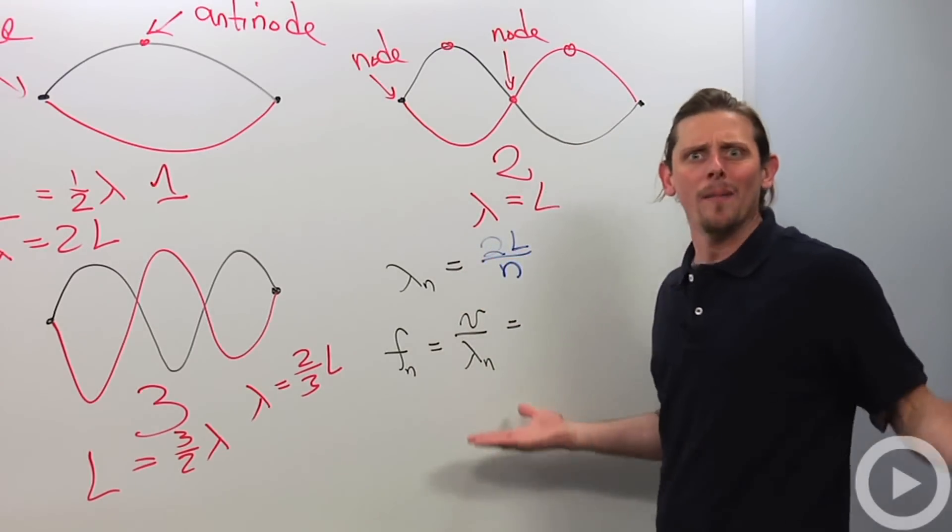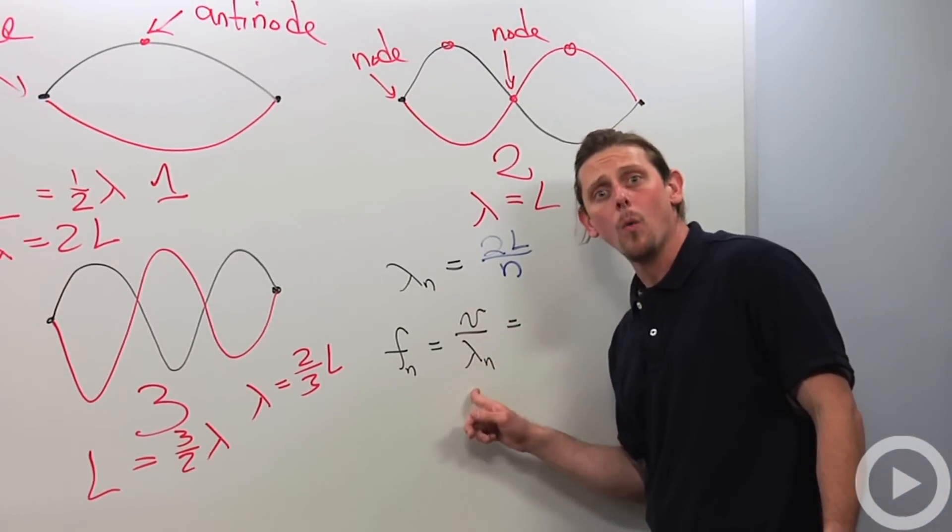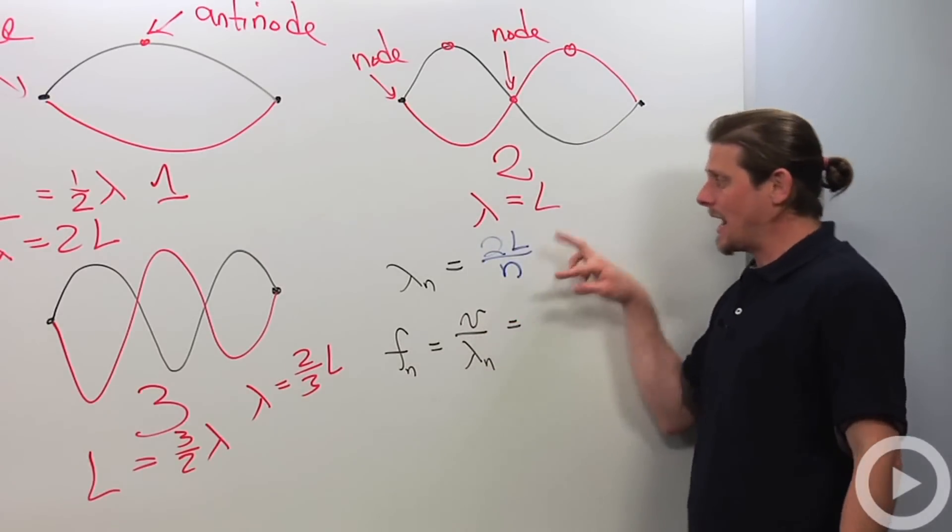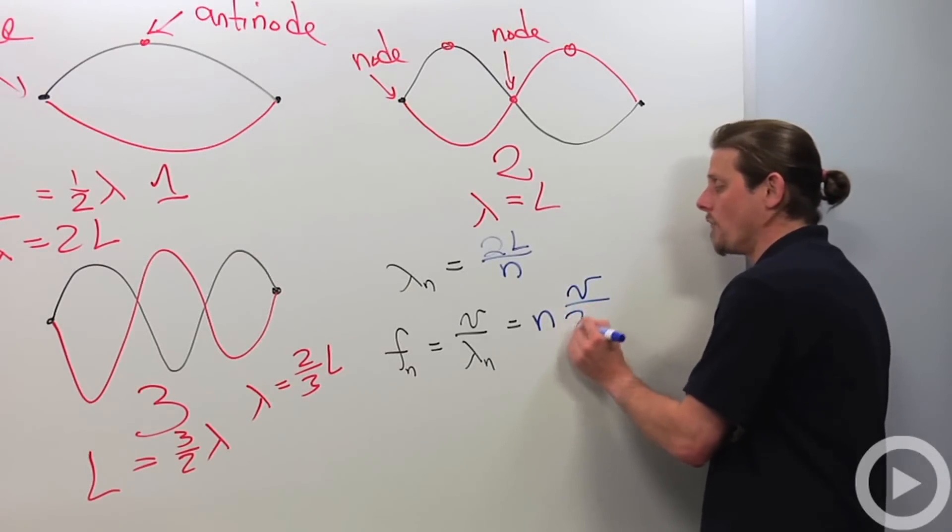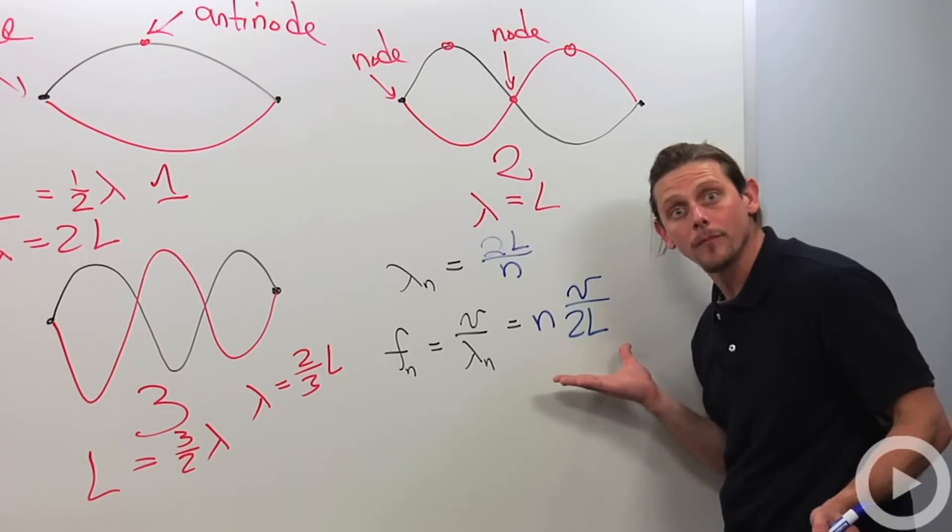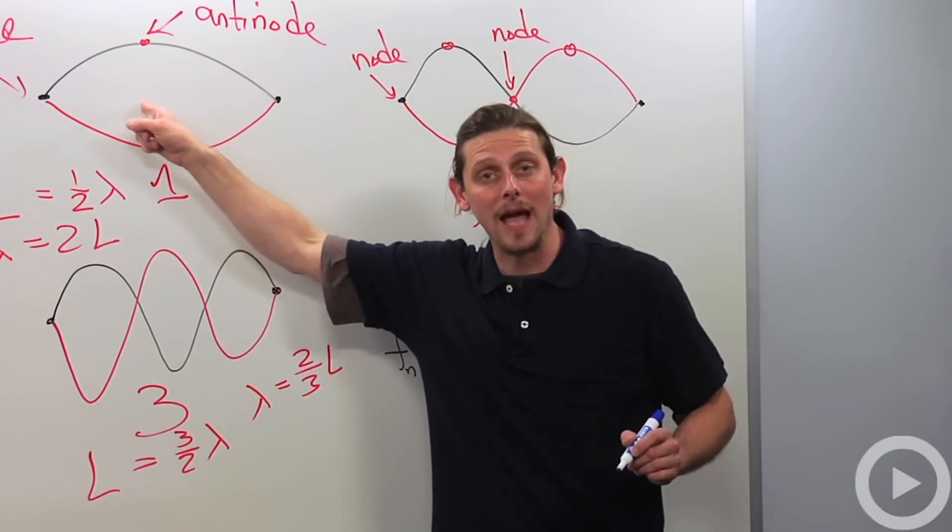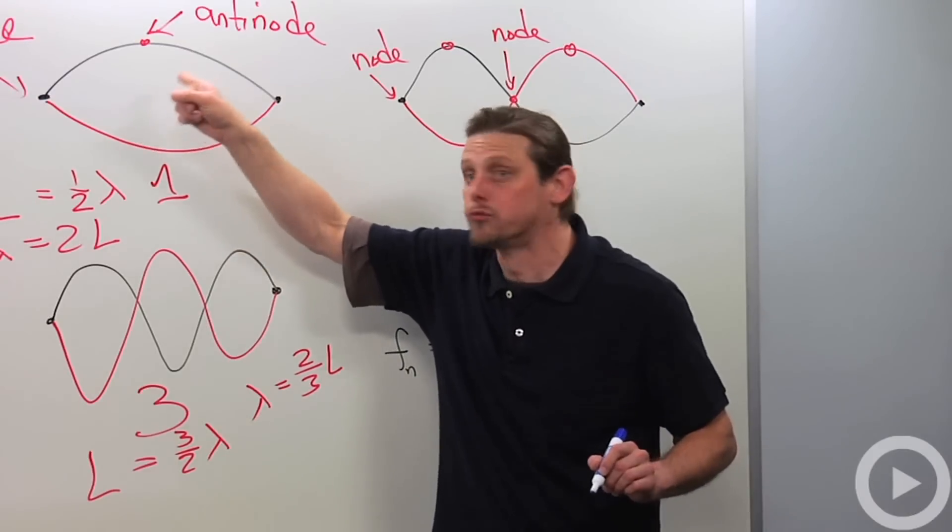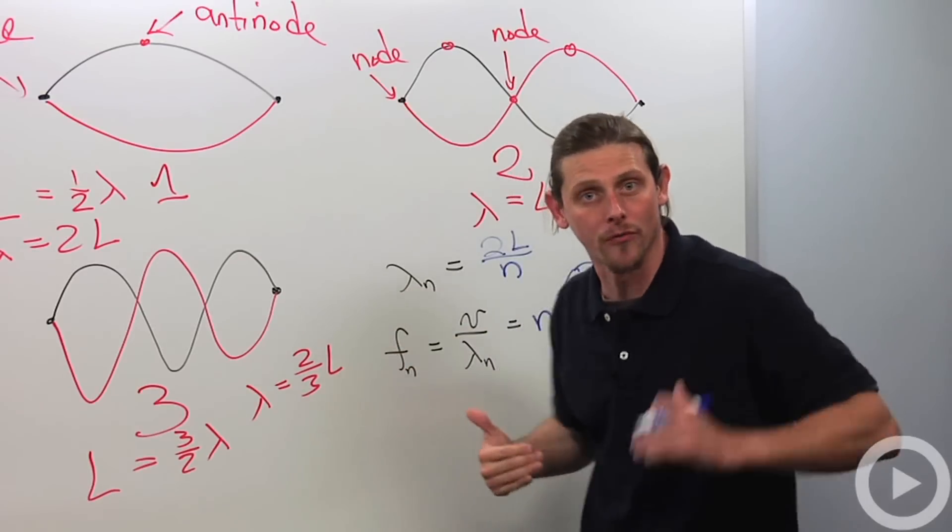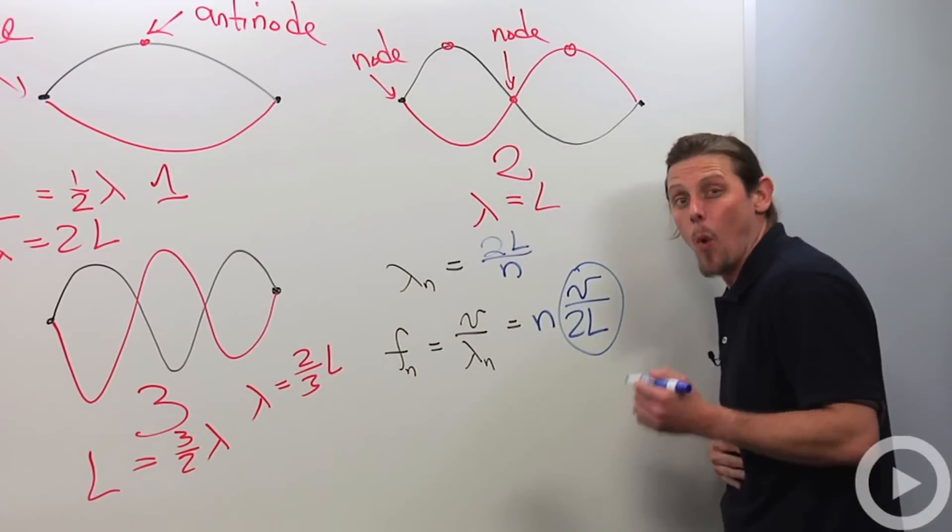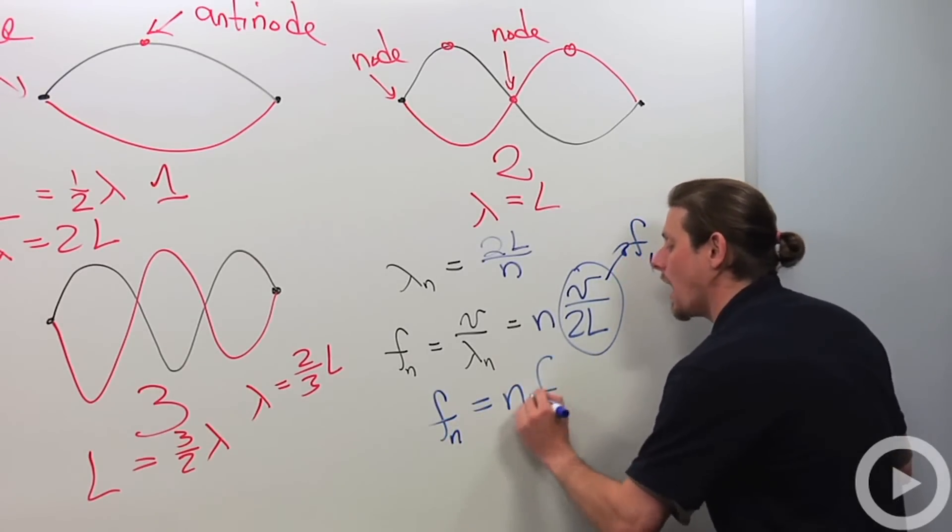Well, what about the frequency? Well, frequency is always equal to speed divided by wavelength. So when I take this speed and I divide by this wavelength, I end up getting N times V over two L. Now, V over two L is the lowest frequency that we get. It's the frequency associated with this dude right here, which only has half a wavelength showing. That's called the fundamental frequency. And we'll call it F1. So this is F1. So that means that Fn is N times F1.